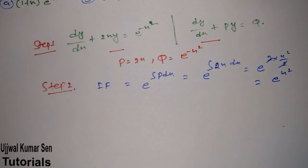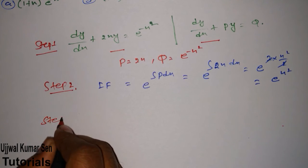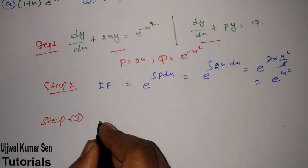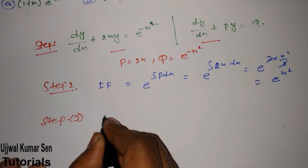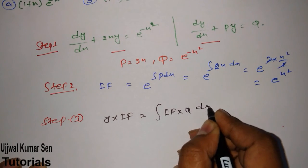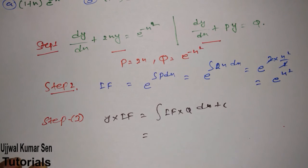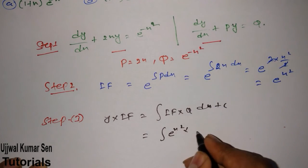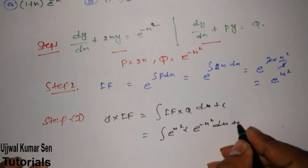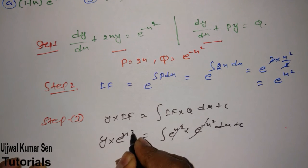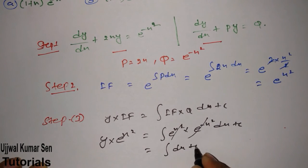Step 3 — almost the final step. Apply the formula: y times integrating factor = integral of (integrating factor times Q) dx + C. Integrating factor is e to the power x squared and Q is e to the power minus x squared. These cancel, so we get: y times e to the power x squared = integral of dx plus C.